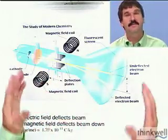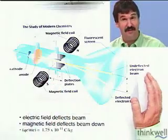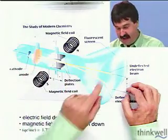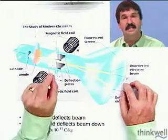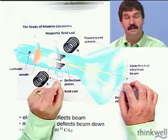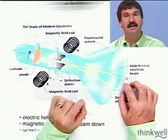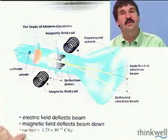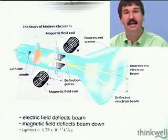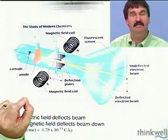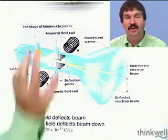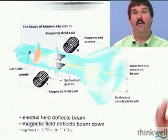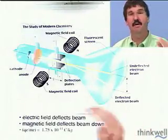Then by going through some physics calculations, and you have to take a different Thinkwell course to do the physics, he could determine what the speed of that electron beam was. So he knew the speed of the electrons. By knowing the speed of the electrons, he ultimately could determine the ratio of the charge of the electrons to the mass of the electrons. But he couldn't determine the charge or the mass, only the ratio of charge to mass.